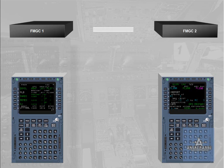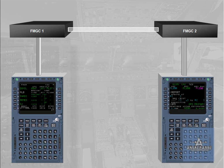Both FMGCs exchange data through a cross-torque bus and are synchronized. When both FMGCs cross-torque, they are in dual mode of operation. The FMGC which drives the synchronization is called master.